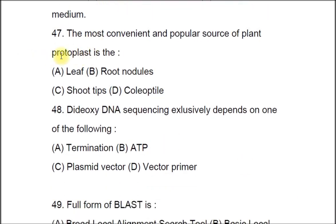Question 47: The most convenient and popular source of plant protoplasts is A) leaf, B) root nodules, C) shoot tips, D) coleoptile. The correct answer is A, leaf.